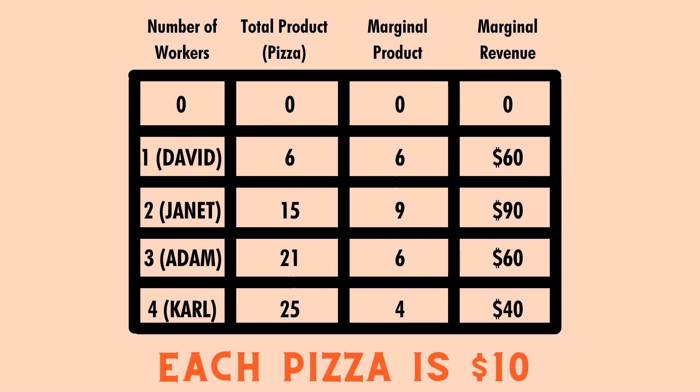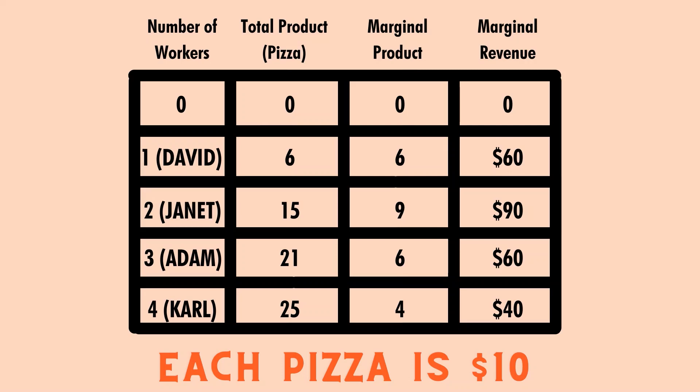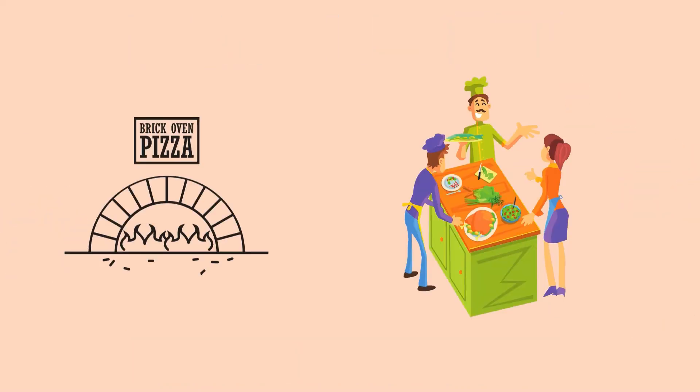So why does the marginal revenue initially increase — like a positive thirty-dollar increase from the first to the second worker — but then start to decrease with Adam? It has to do with the law we're discussing: the definition states that all other inputs are held fixed. We're only increasing the number of workers, not the number of ovens or the space in the store. All these fixed resources affect and decrease the marginal revenue of each additional worker — we don't want too many cooks in the kitchen.